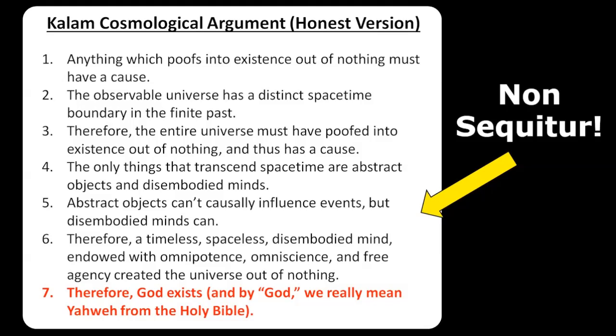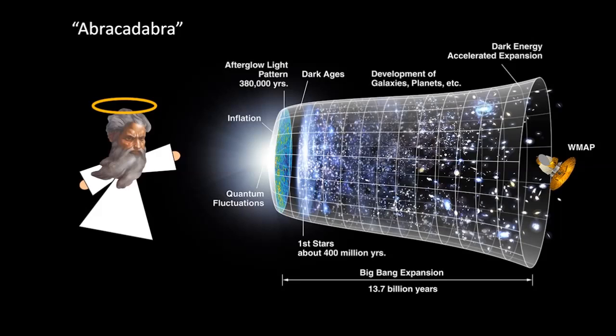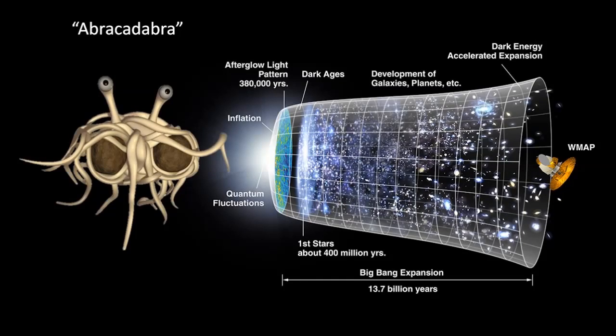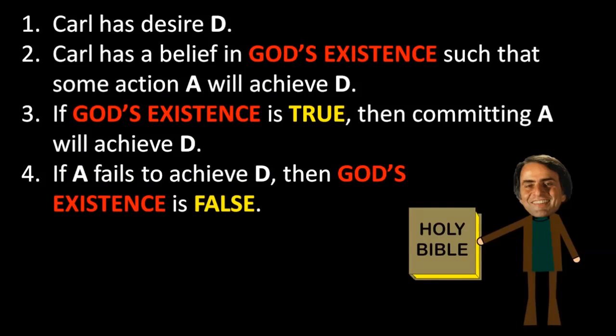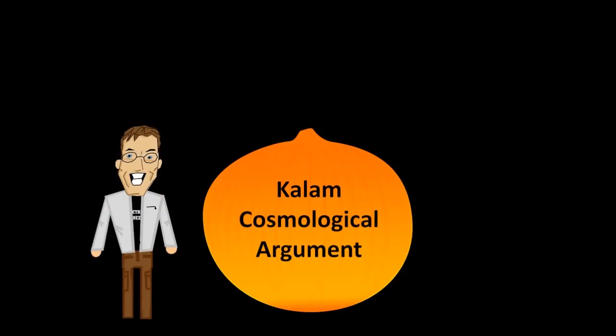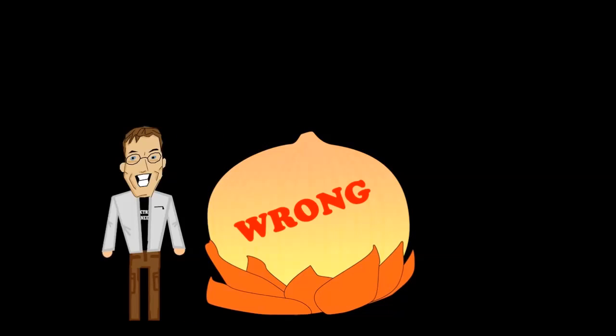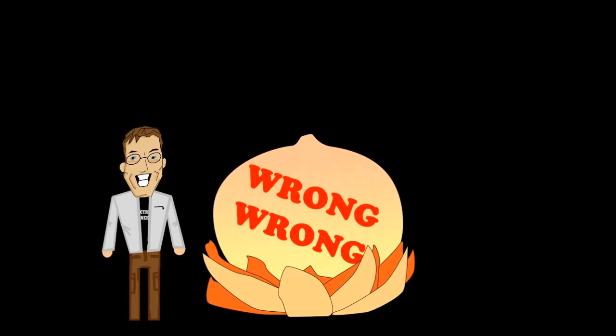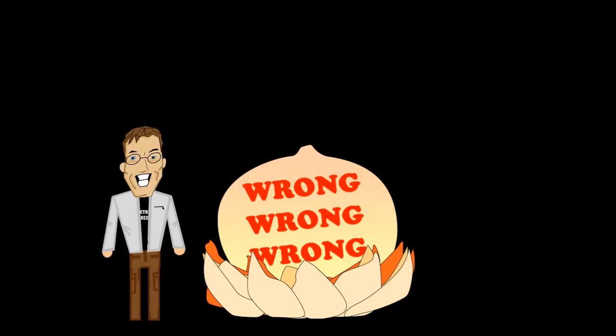Even if we accepted the entire argument outright, we'd still be no closer to understanding how the universe was actually created, what specific being or beings were responsible, or what functional impact it could possibly have on any single decision I could ever hope to make. It's like a huge philosophical onion of wrongness where every layer you peel off just reveals yet another inexcusable layer of wrong.